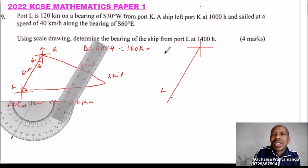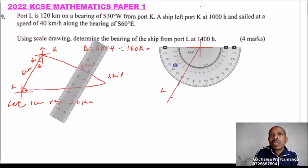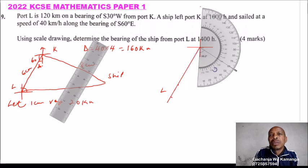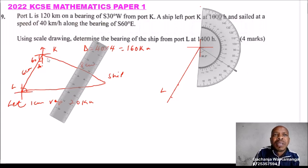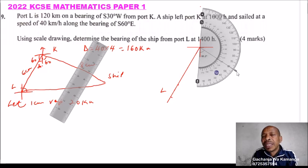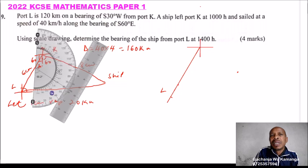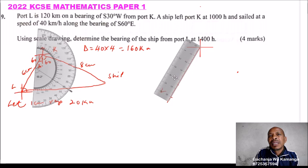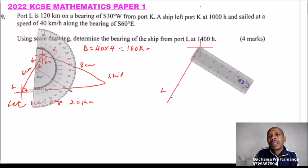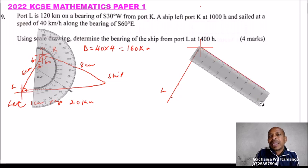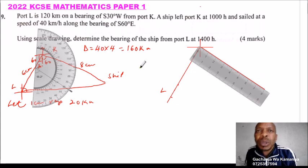Now we get the ship's position. From K, the bearing is South 60 degrees East, so this angle from south toward east is 60 degrees. We take our protractor and measure an angle of 60 degrees. Then using our ruler, we draw that line and mark 8 centimeters along it — that is where the ship is at 14:00 hours.